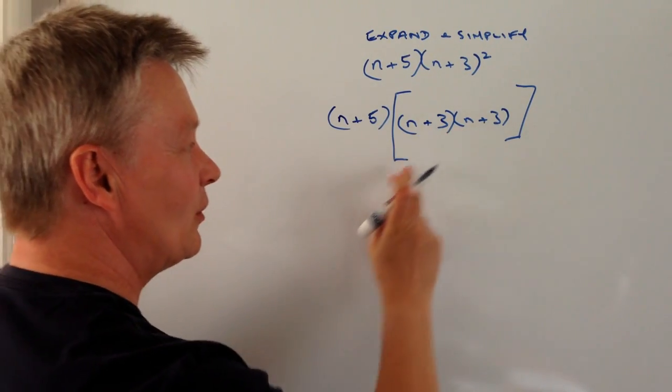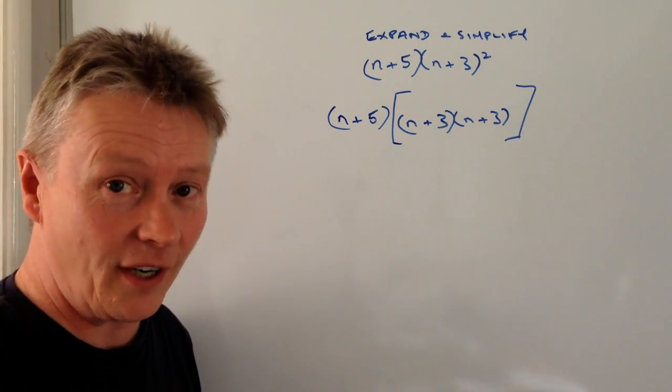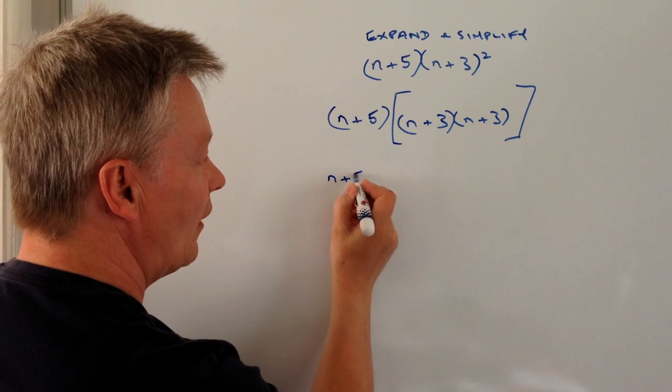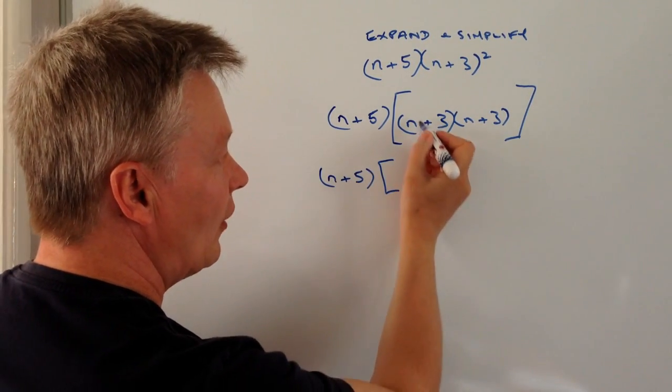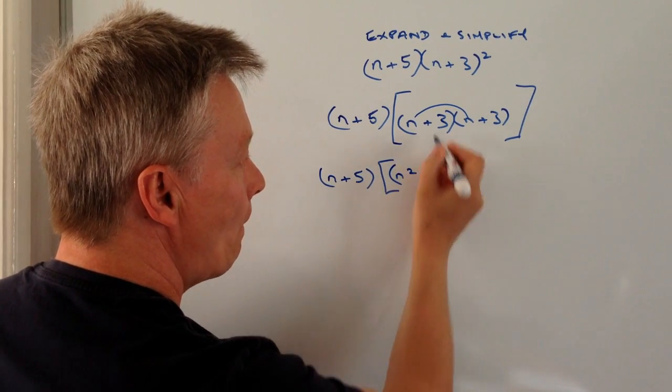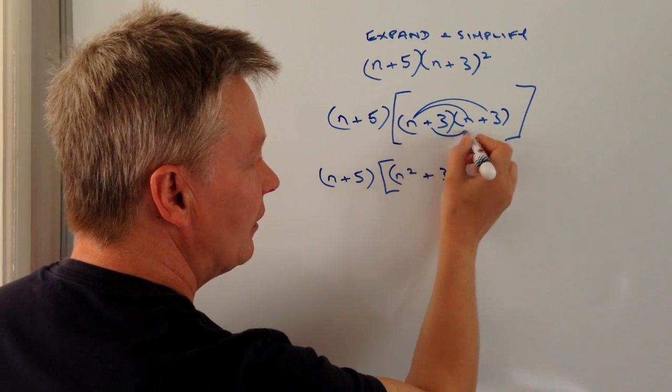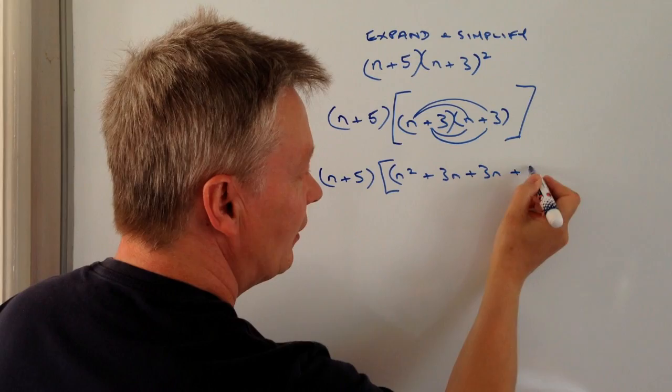So let's deal with what's inside the brackets first, inside the square brackets. I'm just going to leave this outside for the moment. I've got n plus 5, and then inside the brackets here I've got n times n which is n squared plus 3n plus 3n again and then finally plus 9.